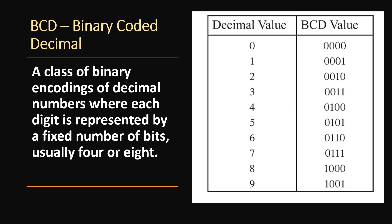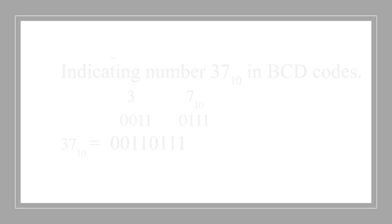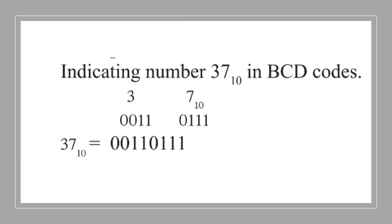Binary Coded Decimal, a class of binary encodes of decimal numbers where each digit is represented by a fixed number of bits, usually 4 or 8. This example shows how 37 is converted to BCD codes.